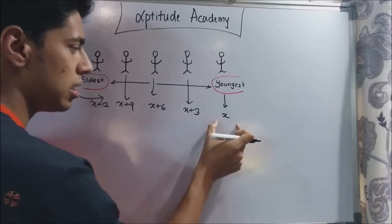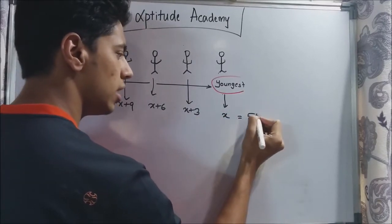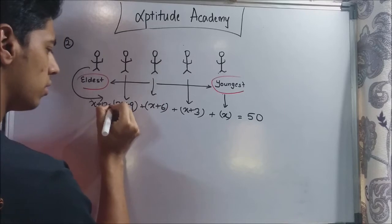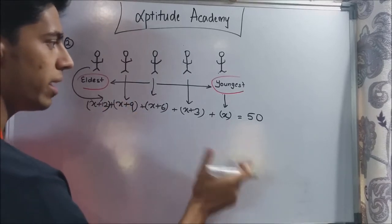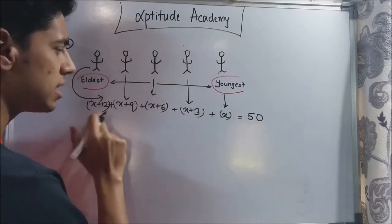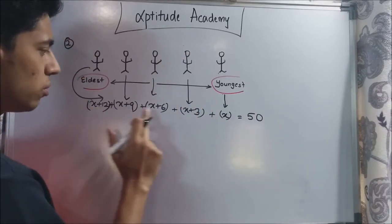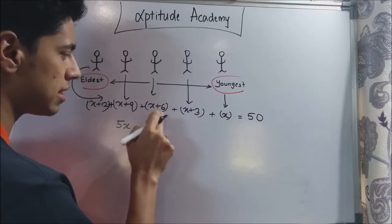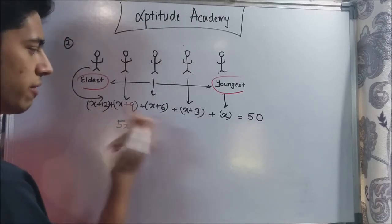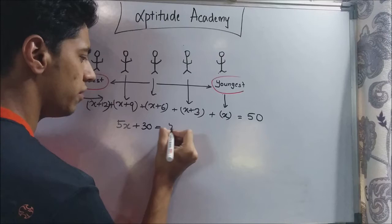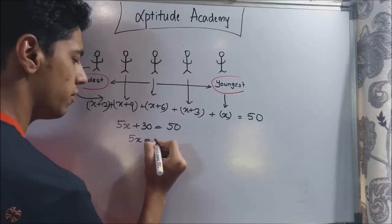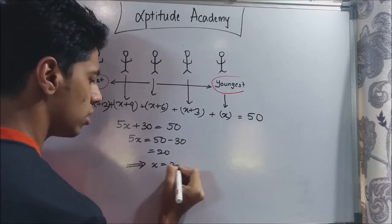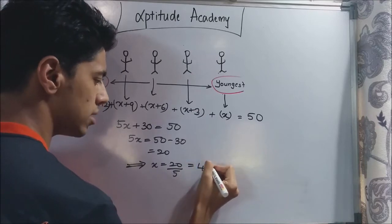They have said that the sum of all these ages will be 50. Adding them all up gives 50 years. The youngest is x, so we solve: there are five x terms giving 5x, and the constants 3 plus 6 plus 9 plus 12 equal 30. So 5x plus 30 equals 50, meaning 5x equals 20, so x equals 4 years. The youngest child is four years old.